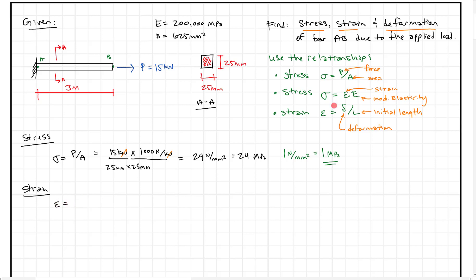And we're going to rearrange, essentially, where we divide both sides by E. But we're going to get sigma divided by the modulus of elasticity. So what's this? Well, we're going to have 24 megapascals divided by 200,000 megapascals. And you might be saying that looks like a small number, and it is.